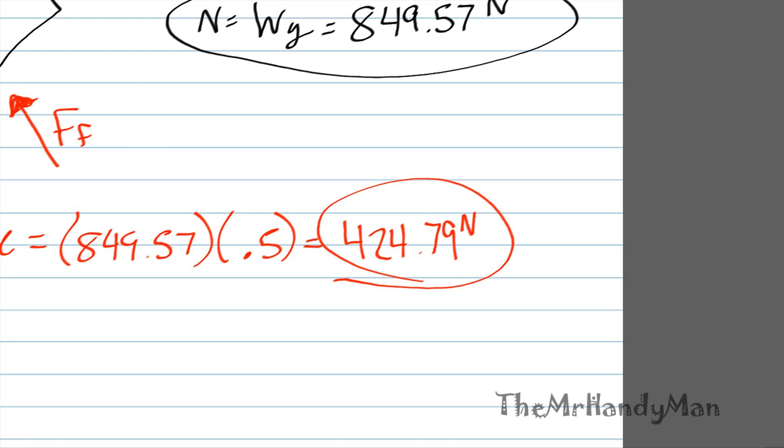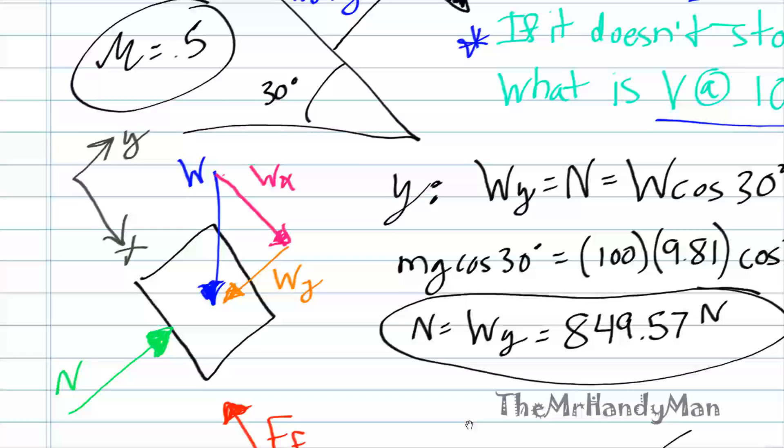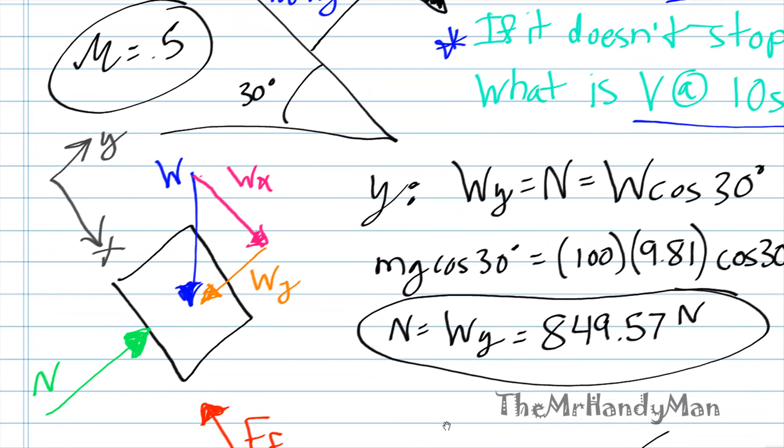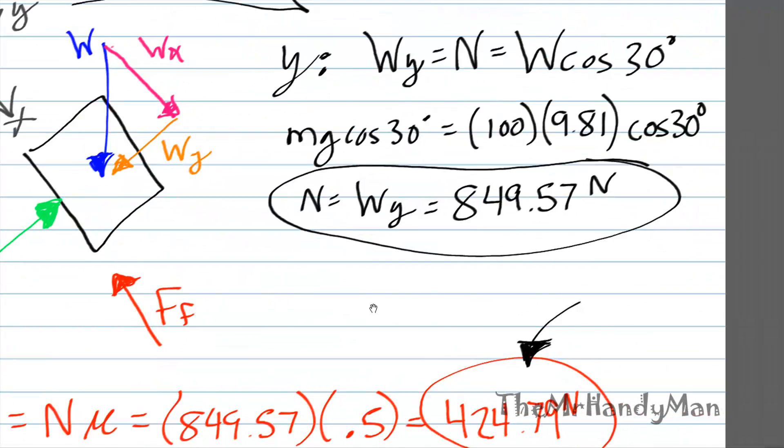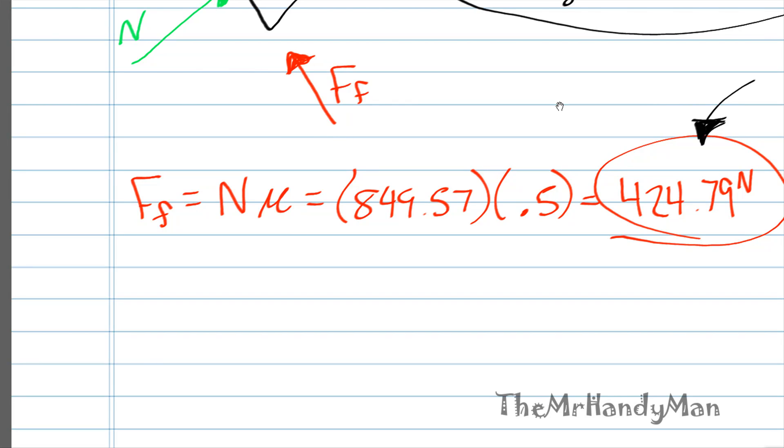Now, we know that the force that's going to be resisting the motion is the friction force. And this is all that is resisting motion right here. Now what's going for motion, you're going to have the WX component, and then also you have the initial motion, which was mentioned earlier. So, let's find out what the force acting on the motion is, which we named WX, which equals W sine 30 degrees, which equals 490.5 newtons.